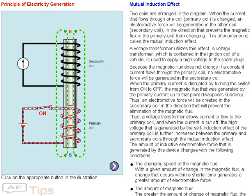Mutual induction effect. Two coils are arranged as in the diagram. When the current that flows through one coil is changed, an electromotive force will be generated in the other coil — the secondary coil — in the direction that prevents the magnetic flux in the primary coil from changing. This phenomenon is called the mutual induction effect.